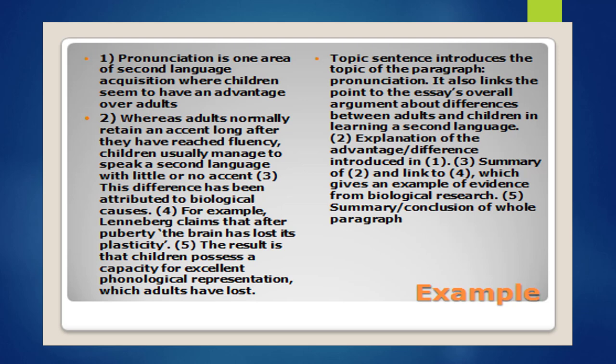Pronunciation is one area of second language acquisition where children seem to have an advantage over adults. Whereas adults normally retain an accent long after they have reached fluency, children usually manage to speak a second language with little or no accent. This difference has been attributed to biological causes. For example, Lenneberg claims that after puberty the brain has lost its plasticity. The result is that children possess a capacity for excellent phonological representation, which adults have lost.